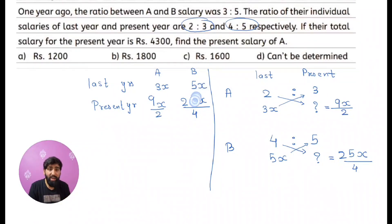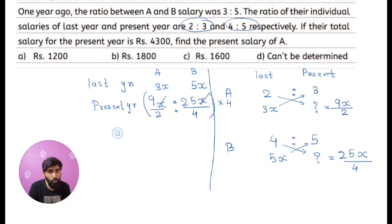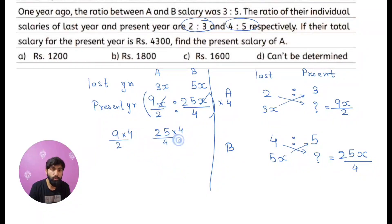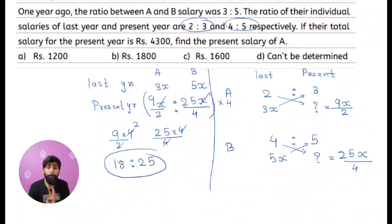Next, I take the ratio of present salaries of A and B, which is 9x/2 : 25x/4. The x cancels out. To eliminate the denominators, I multiply the entire ratio by 4: (9/2 × 4) : (25/4 × 4) = 18 : 25. So the final ratio of present salaries is 18:25.